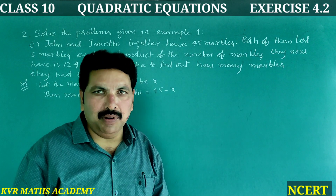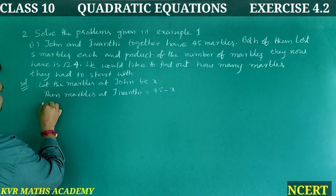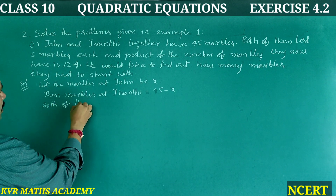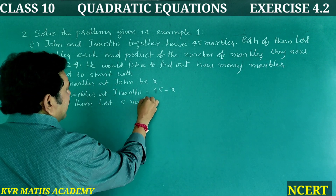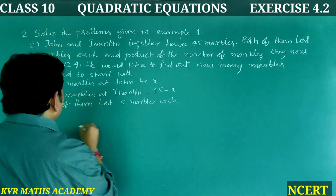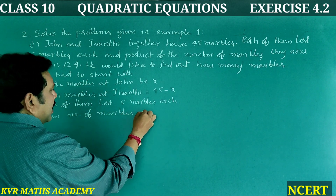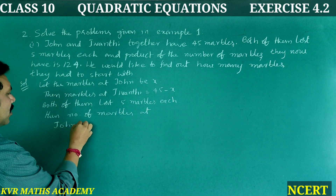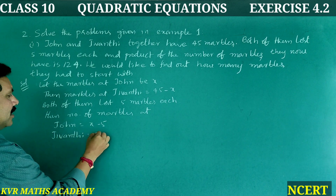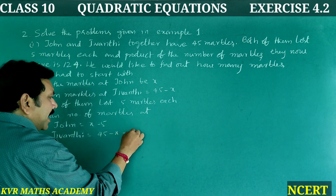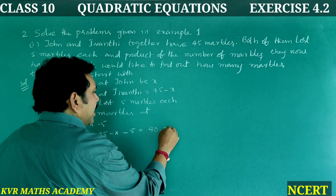Both of them lost 5 marbles each. Then the number of marbles at John is equal to x minus 5, and marbles at Jeevanthi is 45 minus x minus 5, which equals 40 minus x.